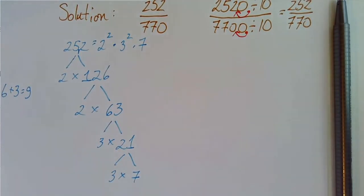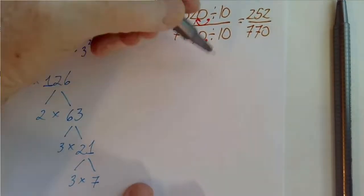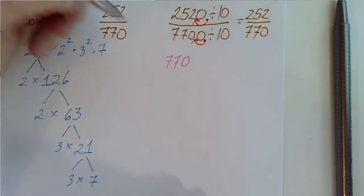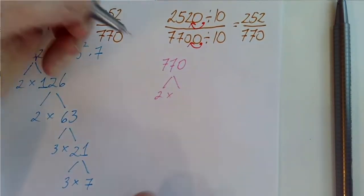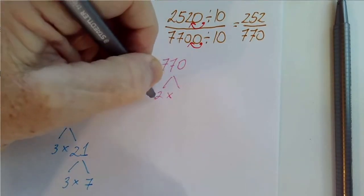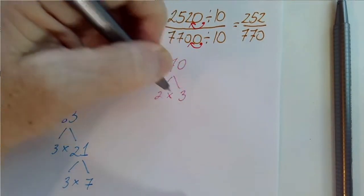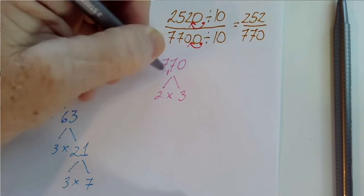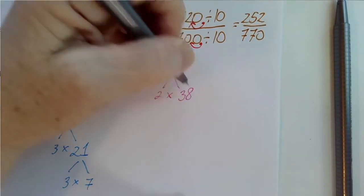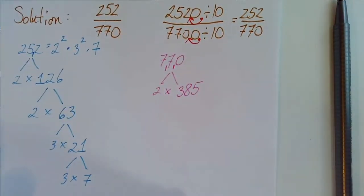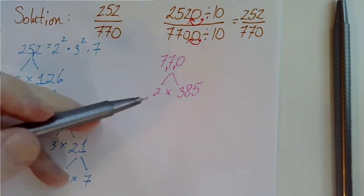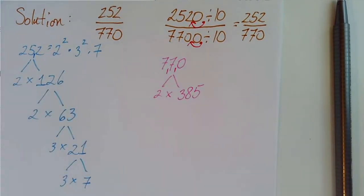Let's do the same thing with 770. We're going to start with 2 again because 0 is an even digit. 2 goes into 7 three times with a remainder of 1. 2 goes into 17 eight times with a remainder of 1. And 2 goes into 10 five times. I know that 5 is odd. So 2 no longer goes into this number.